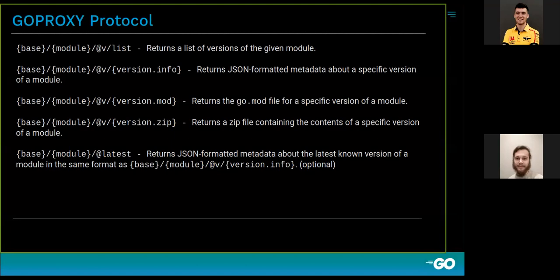The Go proxy protocol is responsible for transferring module data and module metadata. This protocol requires four HTTP methods to be implemented by an HTTP server, plus one optional method. These methods support communication between client and server via GET requests without specific headers. The paths are the containers for all needed parameters, and as you can see, all those URL patterns are pretty simple.